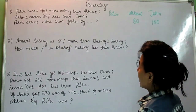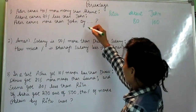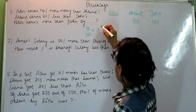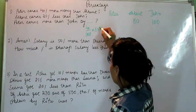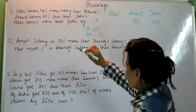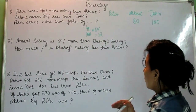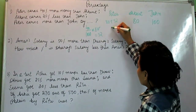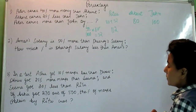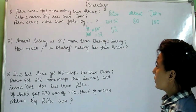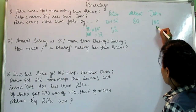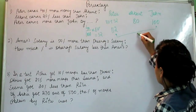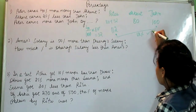Now, Peter earns 40% more money than Albert. 40% of Albert, which is 80, is 32. So Peter equals Albert's money plus 32, which is 80 + 32 = 112. The question asks how much more Peter earns than John. John is 100, Peter is 112, so Peter earns 12 more than John — that is 12%.